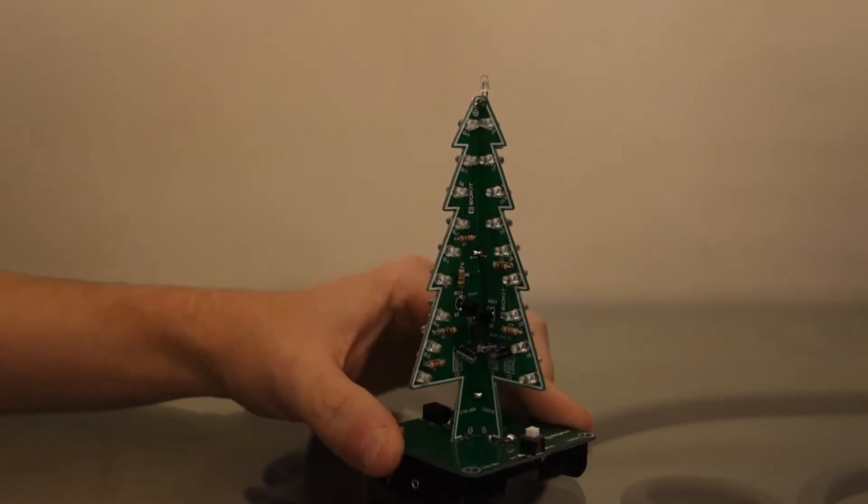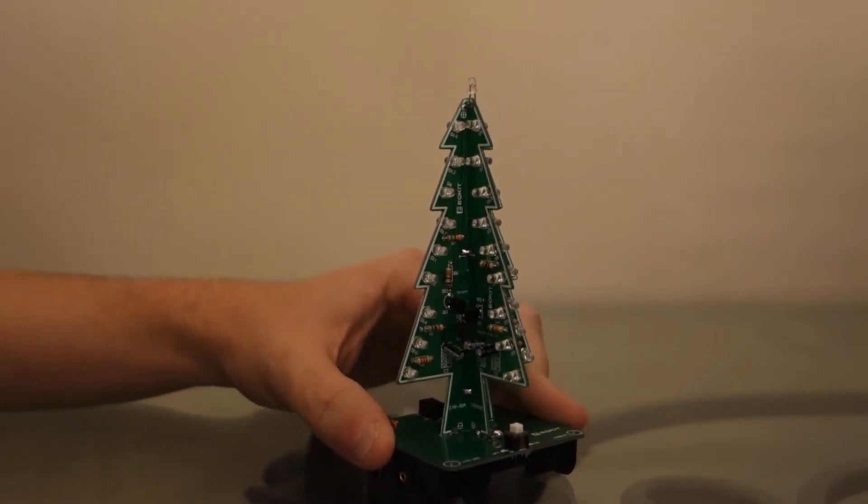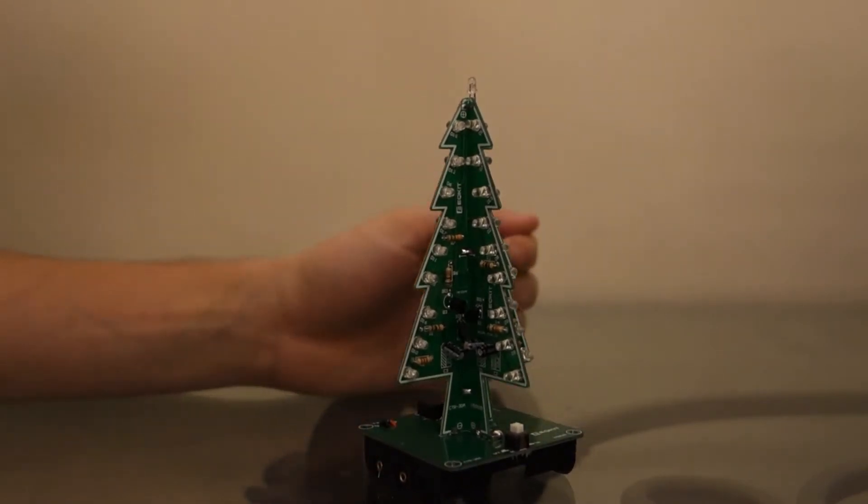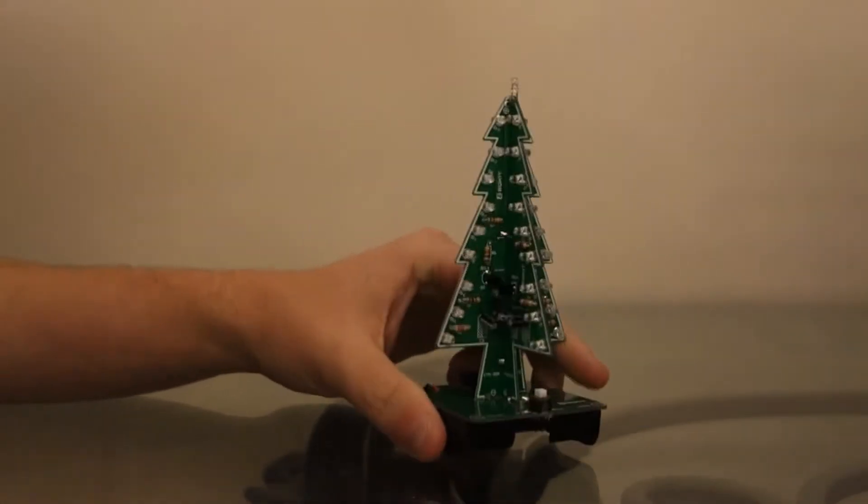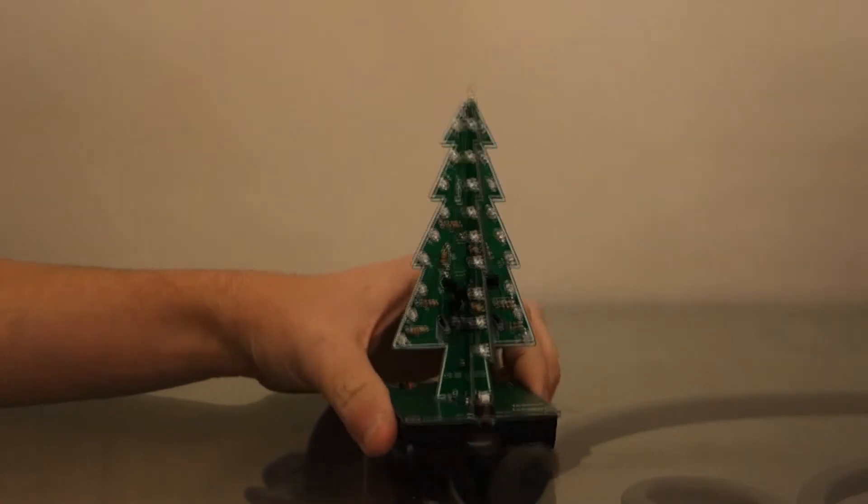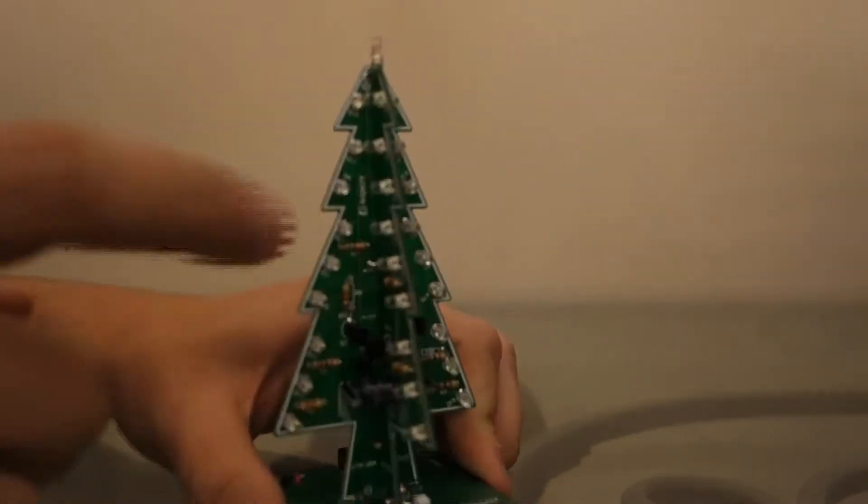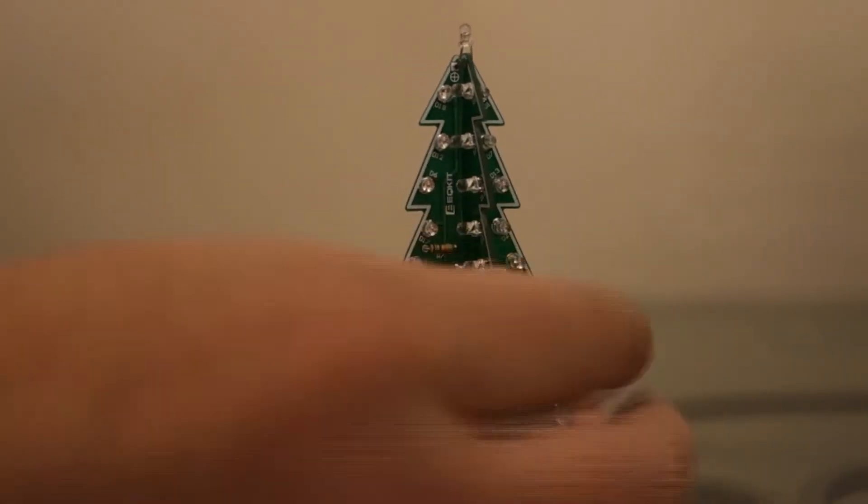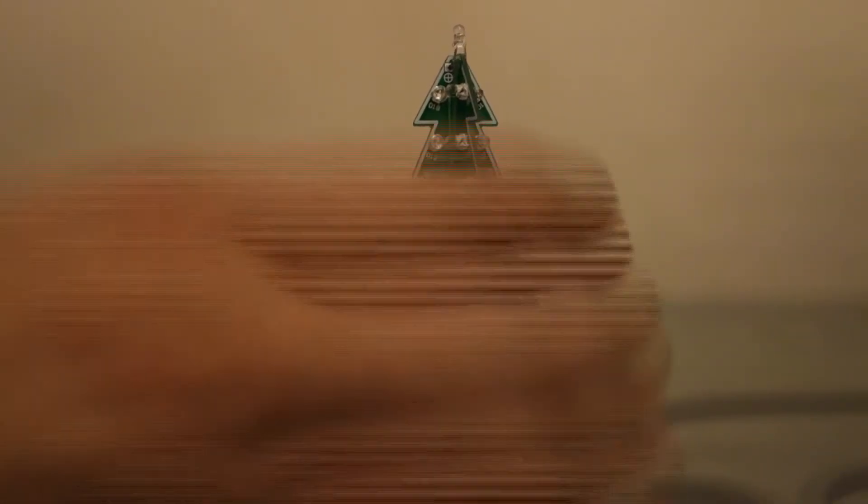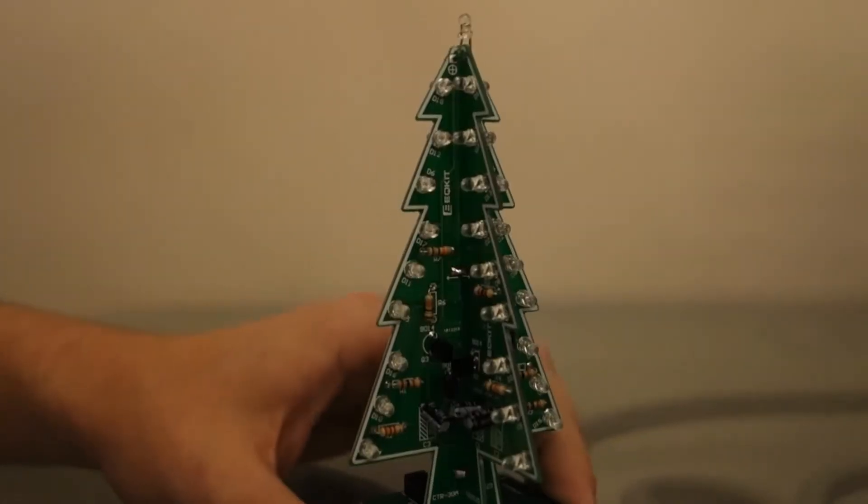That's not supposed to be that way. I didn't get any instructions with this. It just came basically in a bare bones kit and so I was winging it as I went, but these lights are supposed to face out away from the board itself, but by the time I realized that it was too late, so this is what we have.